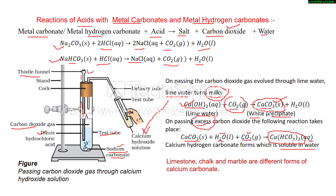The milkiness disappears due to the formation of soluble calcium hydrogen carbonate. Limestone, chalk, and marble are all different forms of calcium carbonate. I hope you have understood the reaction of acid with metals and the reaction of acid with metal carbonates and metal hydrogen carbonates. Remaining reactions will be discussed in the next video.